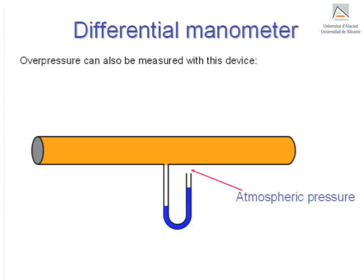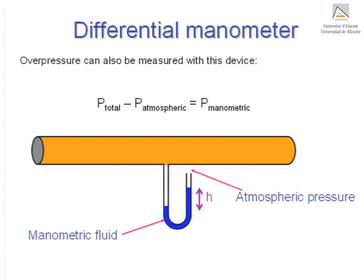Over pressure can also be measured with other devices. The manometer shown here consists of a hollow U-shaped tube, with one end connected to a pipe under pressure and the other end open to the atmosphere. Inside the U-shaped tube is the manometer fluid. If the pipe is under pressure that differs from atmospheric pressure, then the height of manometer fluid in the two arms will be displaced relative to each other. The displaced height H, indicated in the drawing, is directly related to the pressure difference between the pipe and the atmosphere — in other words, to the manometric pressure.